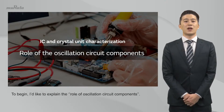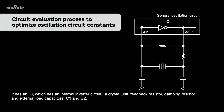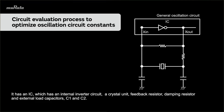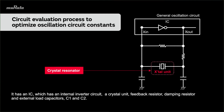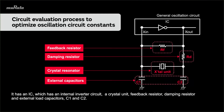To begin, I'd like to explain the role of oscillation circuit components. This is a general oscillation circuit. It has an IC, which has an internal inverter circuit, a crystal unit, feedback resistor, damping resistor, and external load capacitors C1 and C2.